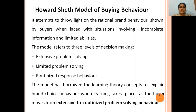The model refers to three levels of decision making. The first is extensive problem solving, where more concentration is given on solving the problem in detail. The second is limited problem solving, where we concentrate on solving only a limited version of the problem. The third is routinized response behaviour — how people respond to routine structures and behaviour.